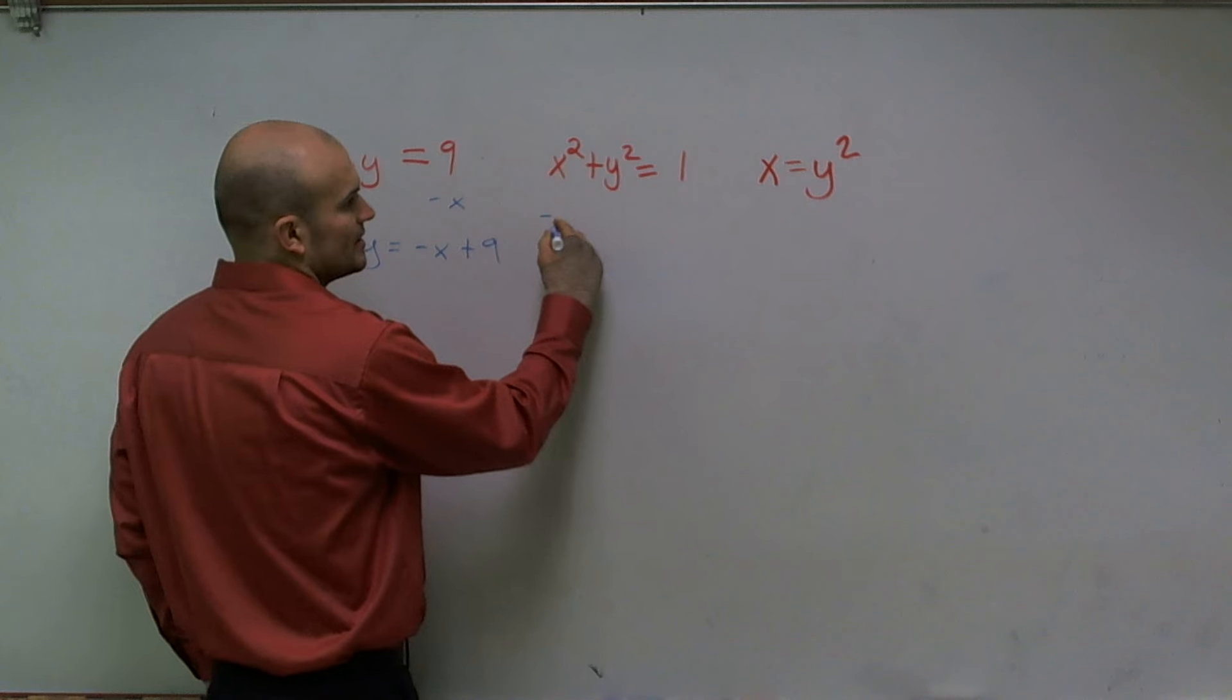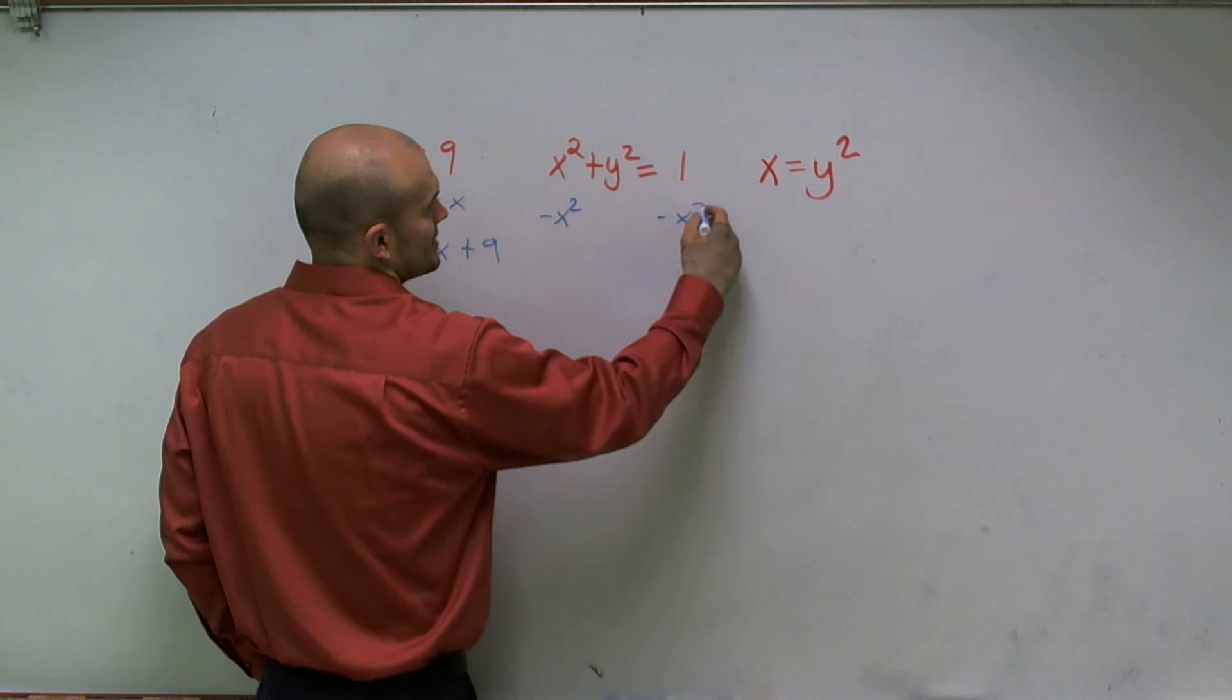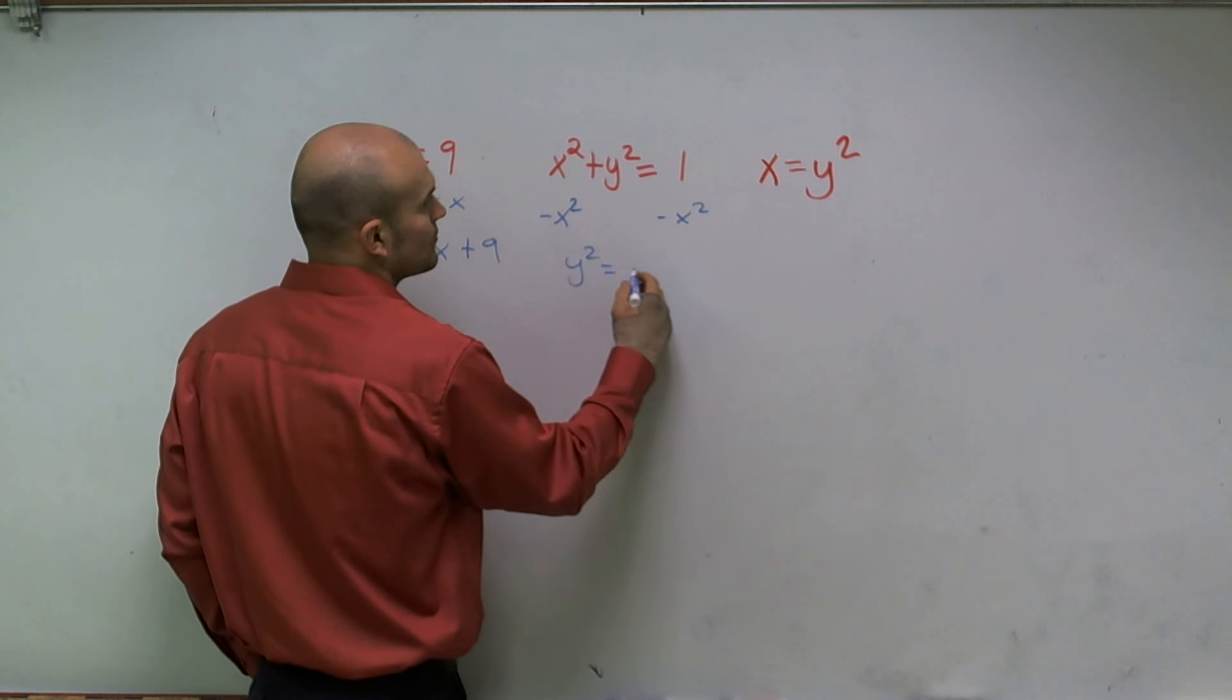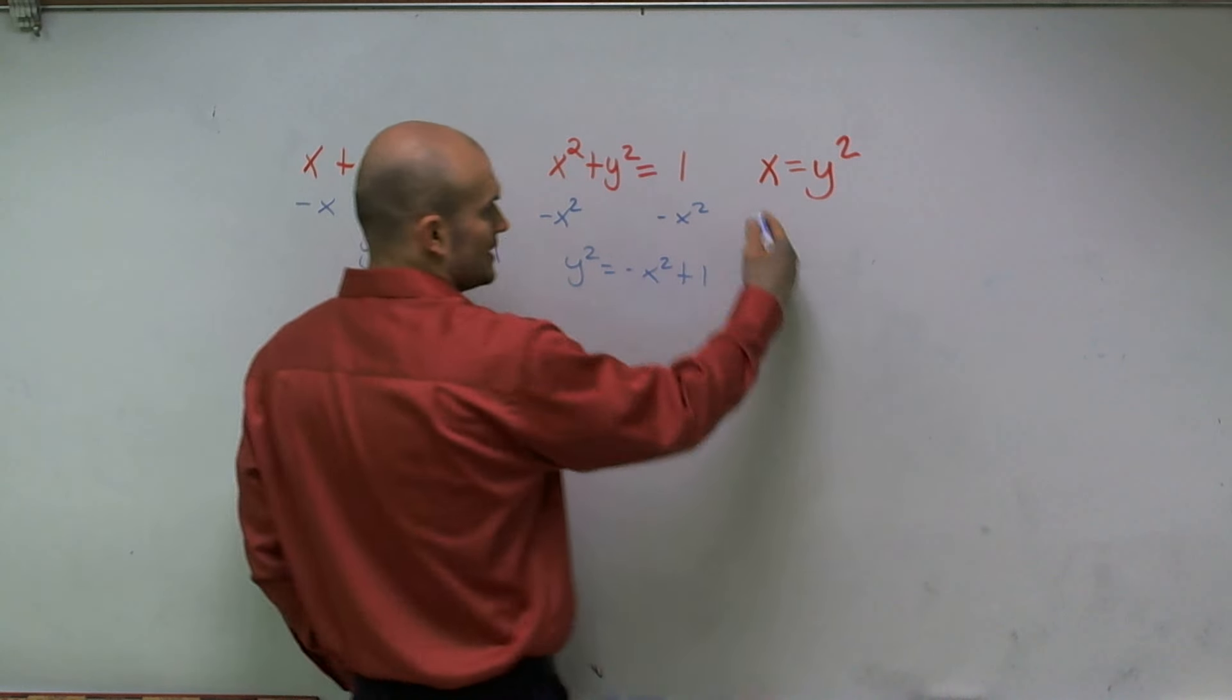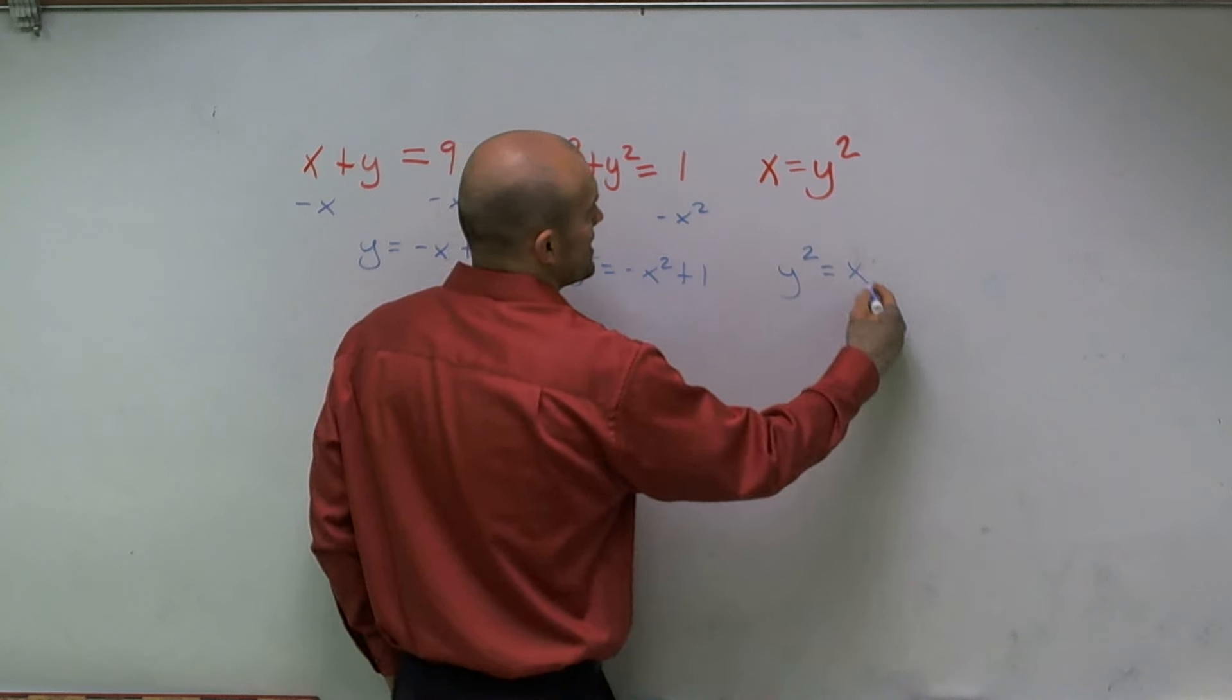If I look at here, I'm going to solve for Y. I subtract X squared and I get Y squared equals negative X squared plus one. And here if I switch those around, I get Y squared equals X.